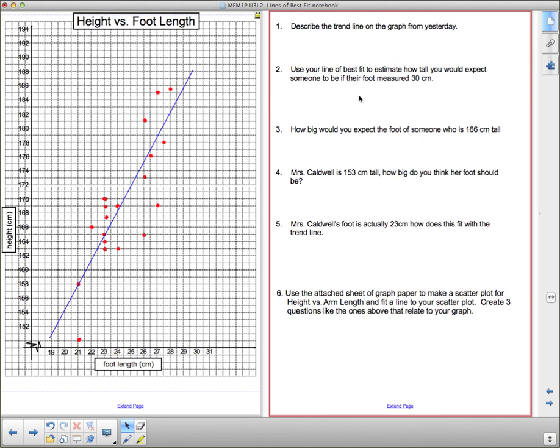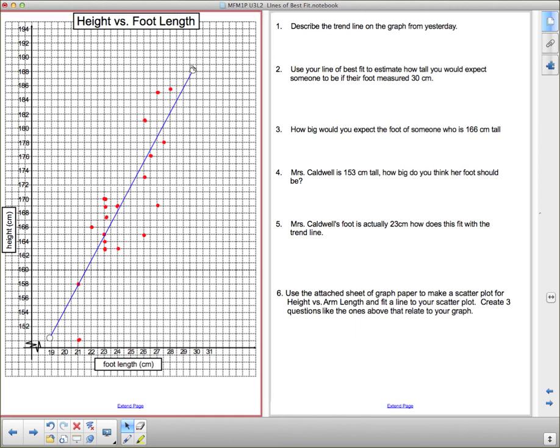Use your line of best fit to estimate how tall you would expect someone to be if their foot measured 30 centimeters. So I want you to try and figure out from here 30 centimeters and try to use your line of best fit. And notice I don't go that far. If I follow my 30 centimeter line up, it's not hitting the line of best fit. So I may need to extend that up there to be able to actually answer that question. How big would you expect the foot of someone who was 166 centimeters tall then I give you a little bit of information on myself there and then this says use the attached sheet of graph paper to make a scatter plot for height versus arm length now you have that data I gave you that data yesterday when you were plotting this stuff now I want you to do it again so on the next page